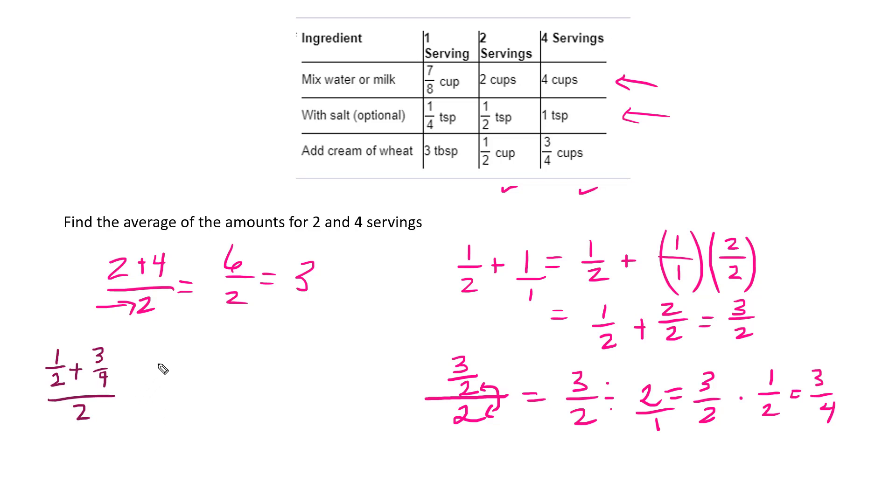So I'm going to add 1 half plus 3 fourths, and I'm still going to average this. If I have to change this into tablespoons, then I know that there's 16 tablespoons for 1 cup. So 1 half times 16 over 1, plus 3 fourths times 16 over 1, and then I'm dividing by 2. So 16 over 2, which is 8.